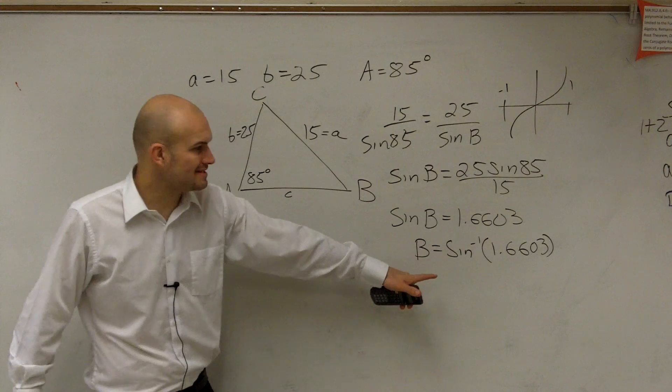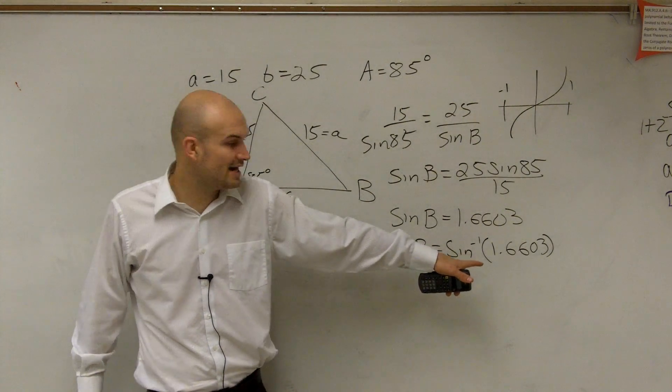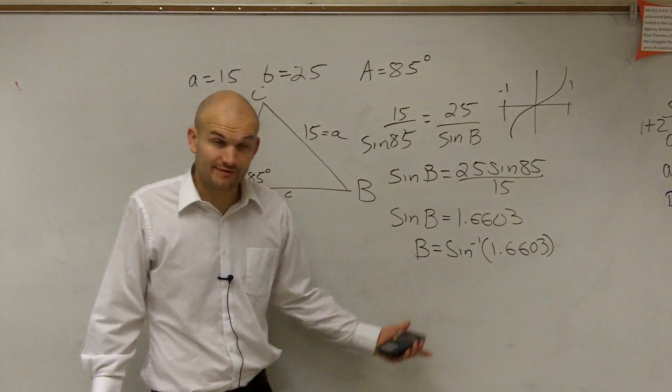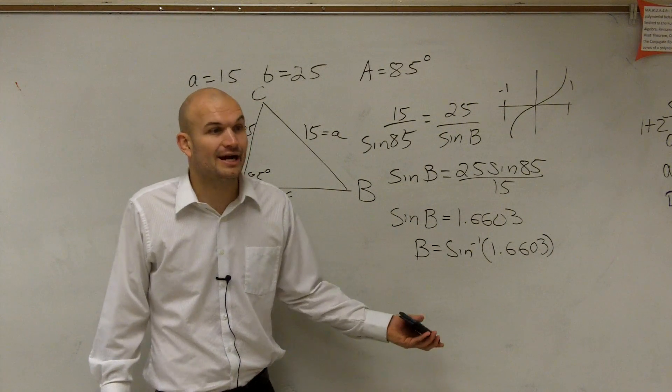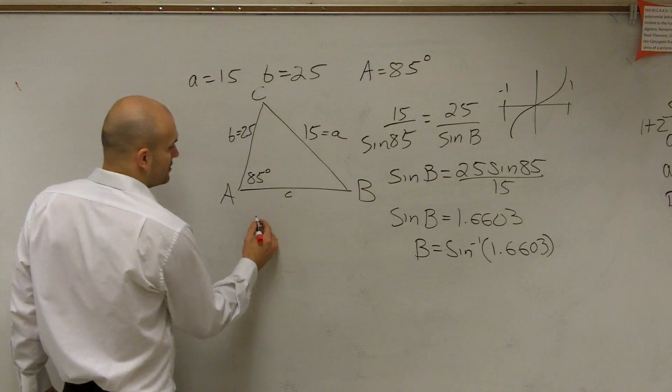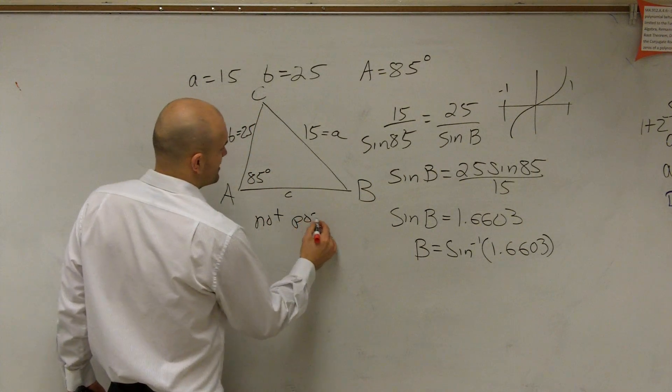So what you guys can notice here is it's impossible for us to take the inverse sine of 1.66 because it's larger than 1. Go ahead and give it a shot. Your calculator is going to say error or not able to do. So therefore, we can say that this triangle is not possible.